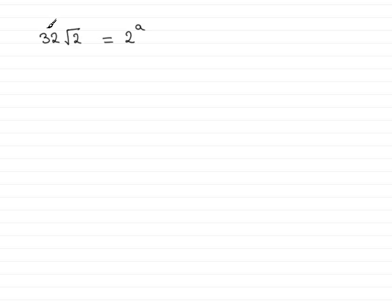Okay, so in this question we've got 32 root 2 equals 2 to the power a, and we've got to find out a. So how are we going to do that?